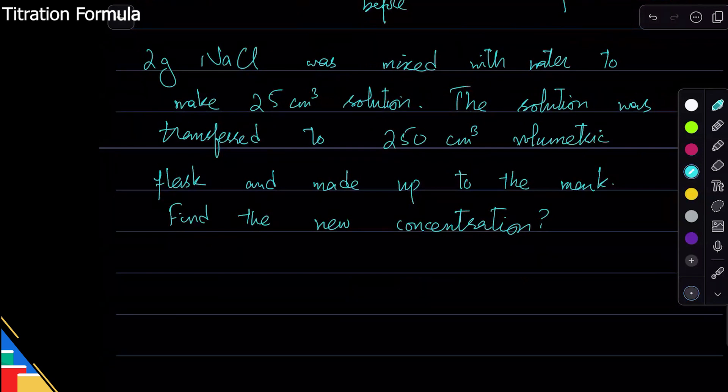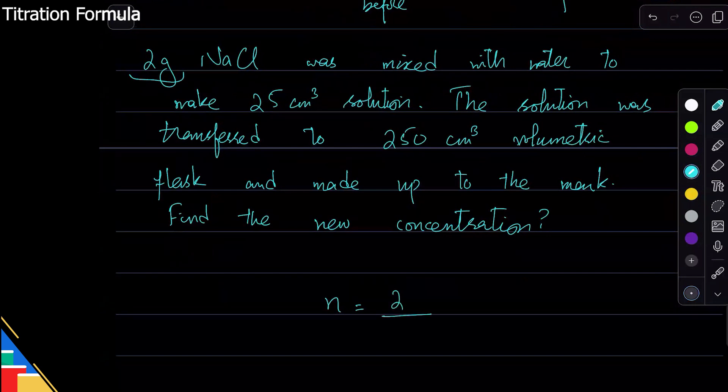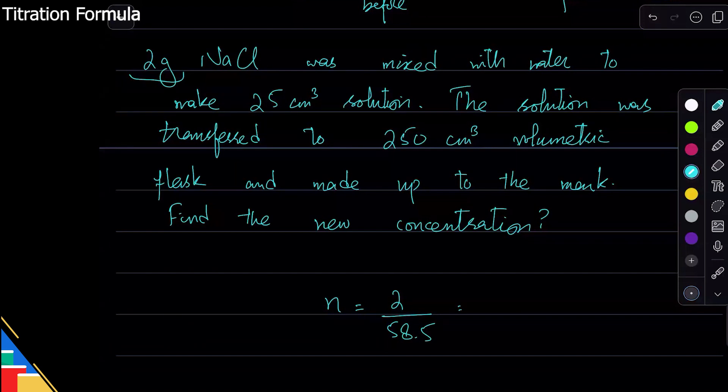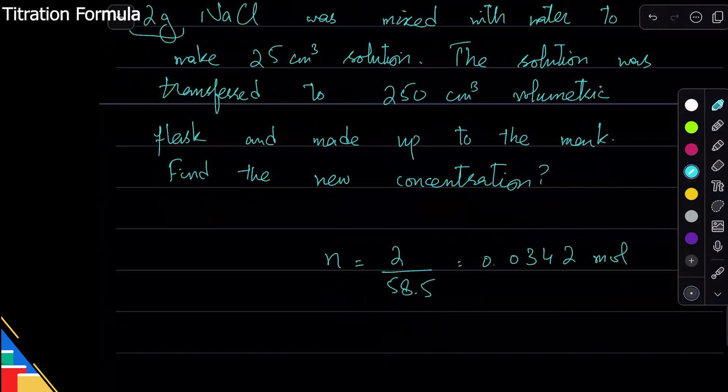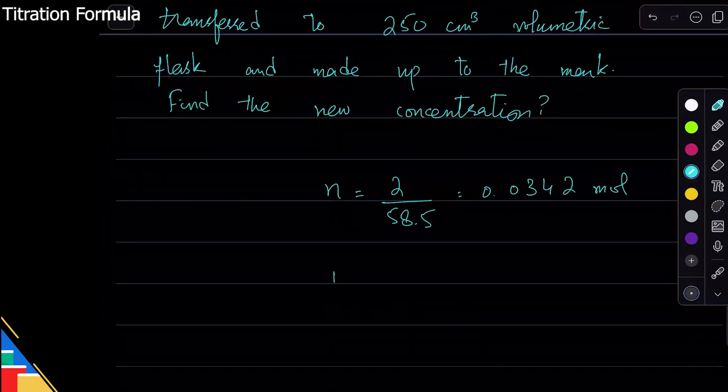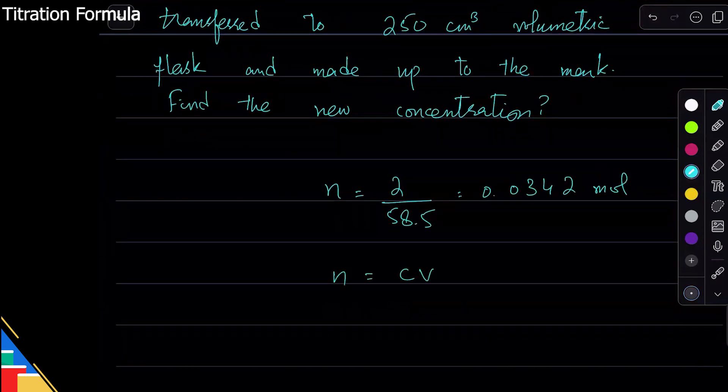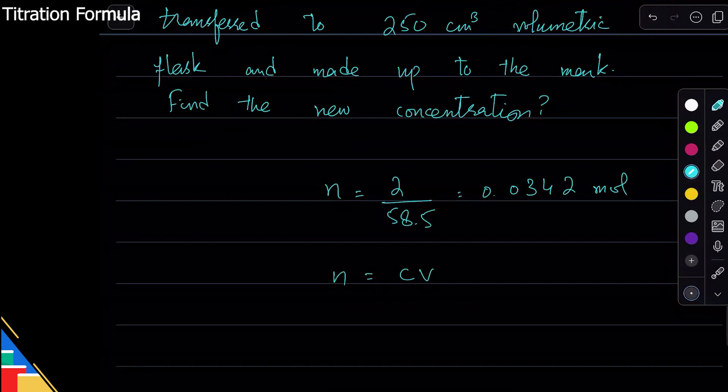First of all, let's figure out the concentration before it was added. I have 2 gram sodium chloride, so I need to first find moles. Number of moles is 2 over sodium chloride is 58.5. So 2 divided by 58.5 is going to be a really small value: 0.0342 moles. I'm writing to three significant figures.